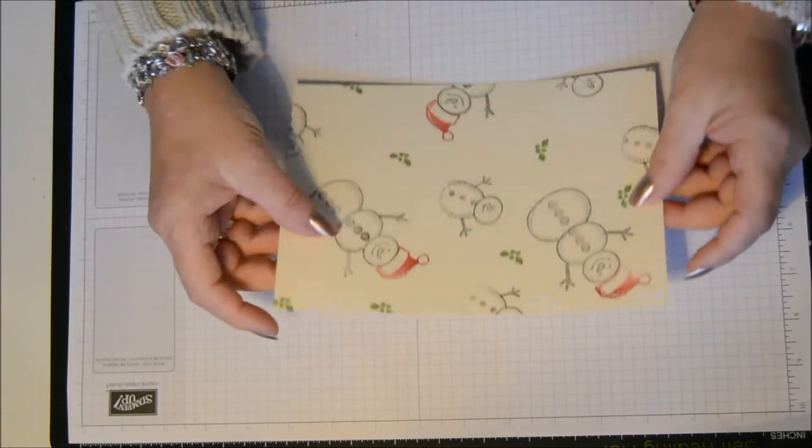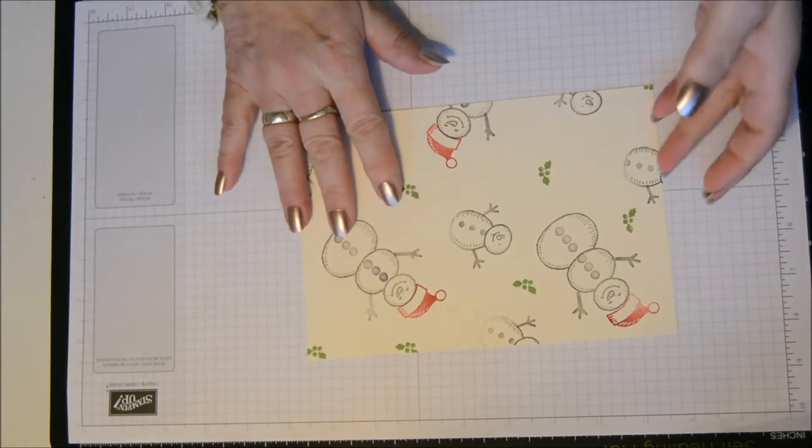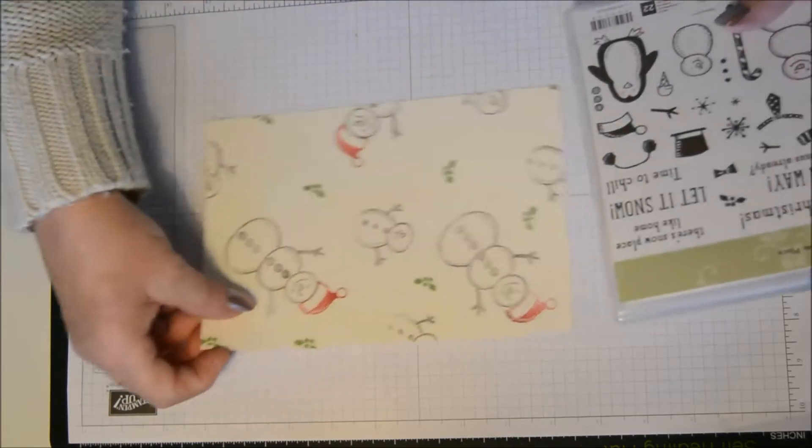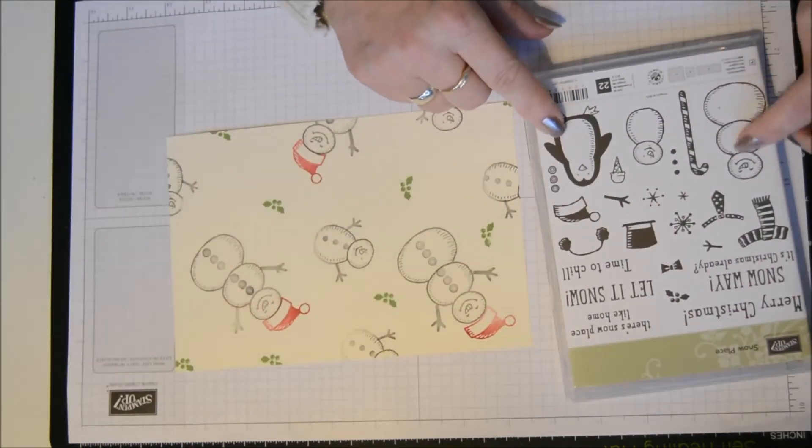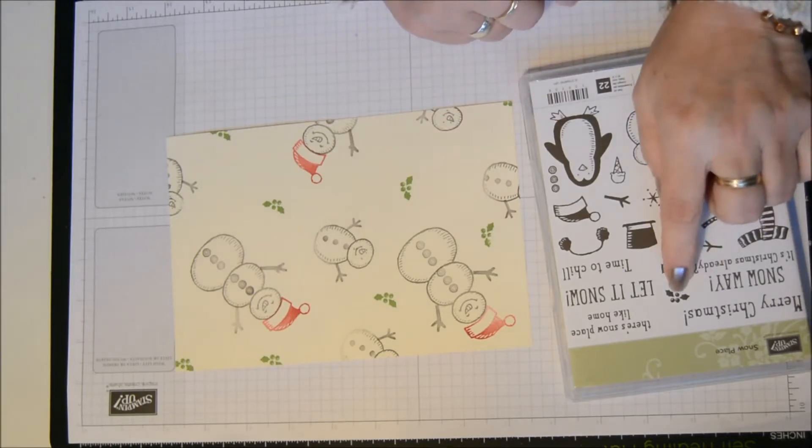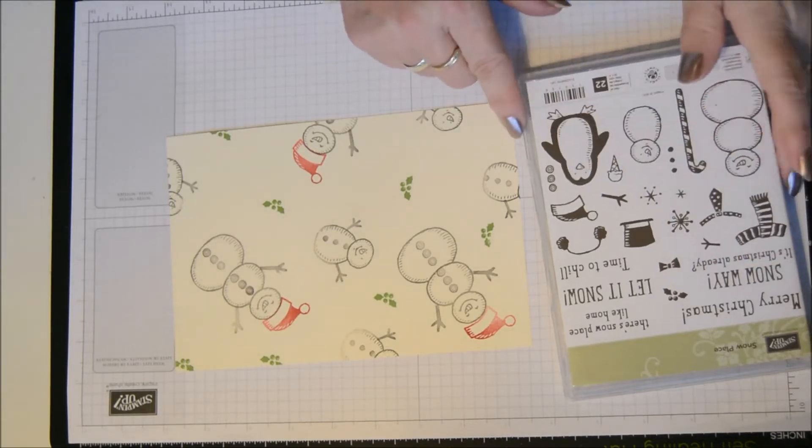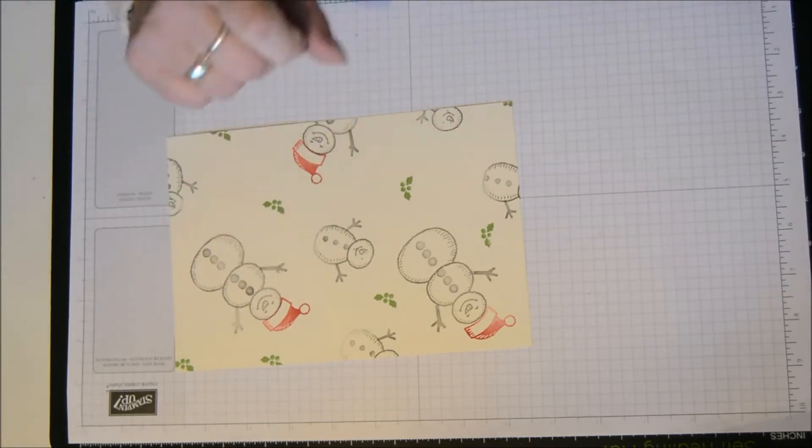Today I'm going to make it in a Christmas type box. I pre-stamped using Snowplace. I used the big snowman, the little snowman, and the holly bush. And the hat.